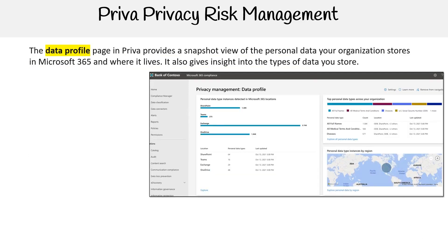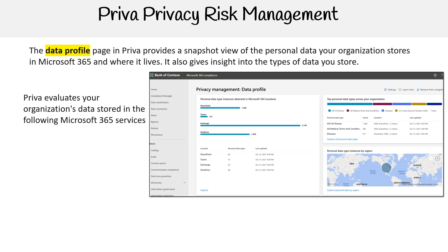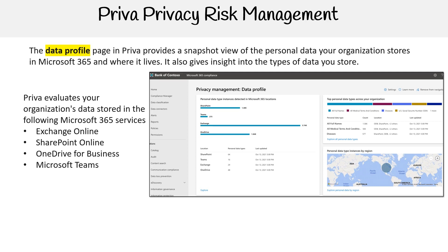The data profile page in Priva provides a snapshot view of the personal data your organization stores in Microsoft 365 and where it lives. It also gives insight into the types of data you store. Priva evaluates your organization's data stored in the following Microsoft 365 services: Exchange Online, SharePoint Online, OneDrive for Business, and Microsoft Teams.